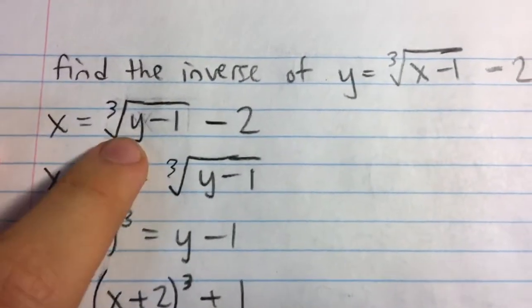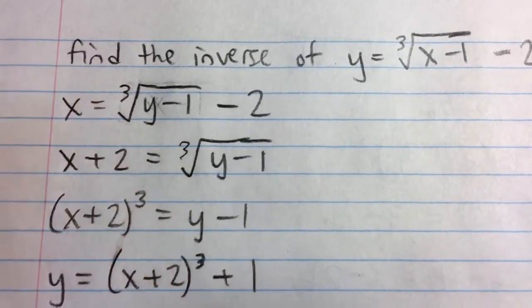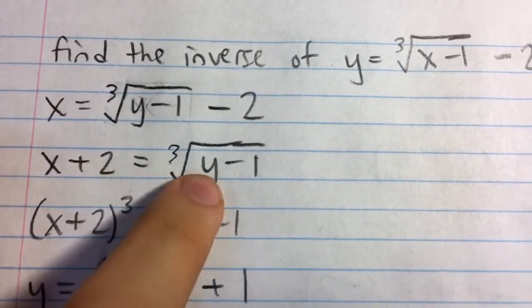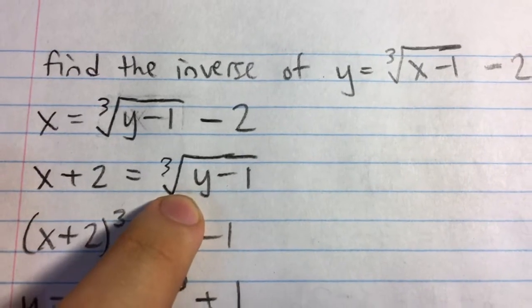And now, what I want to do is solve for y to find this inverse equation. So, I'm going to add 2 to both sides to get x plus 2, and now I have this radical all by itself.